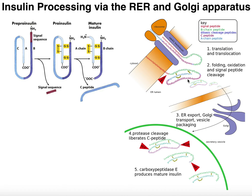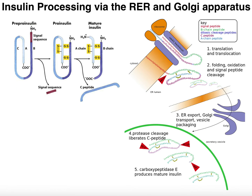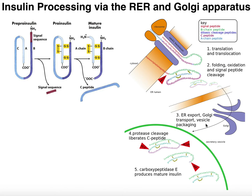Once you have all three things — removal of the signal peptide, folding, and all three disulfide bridges — the protein is now proinsulin, and it's going to be moved into the Golgi apparatus. The Golgi apparatus is the part of this picture closest to the insulin granules. From there, the remaining steps occur in a vesicle generated by the Golgi apparatus.